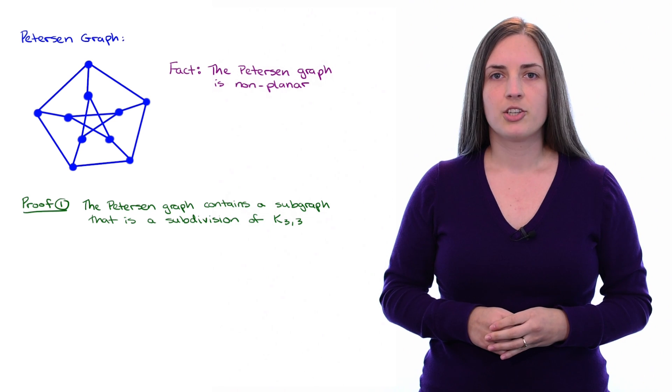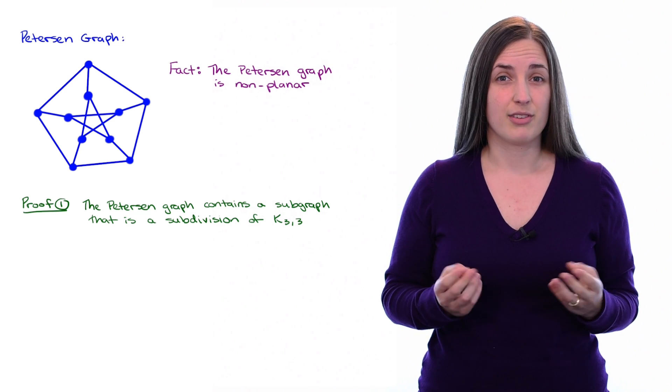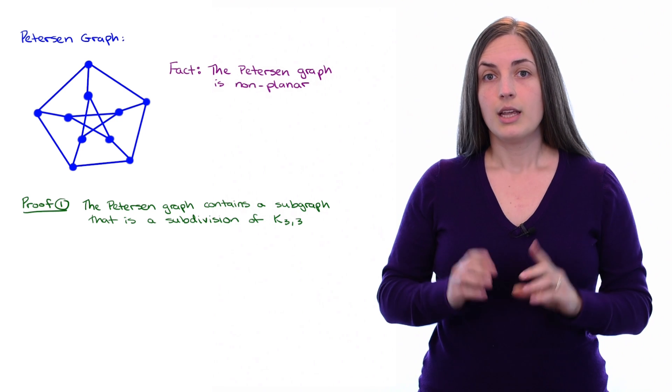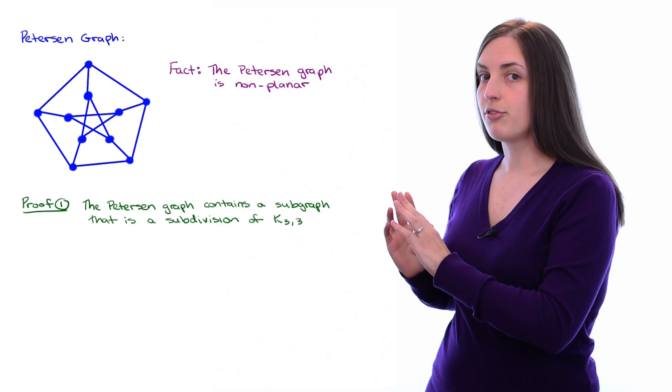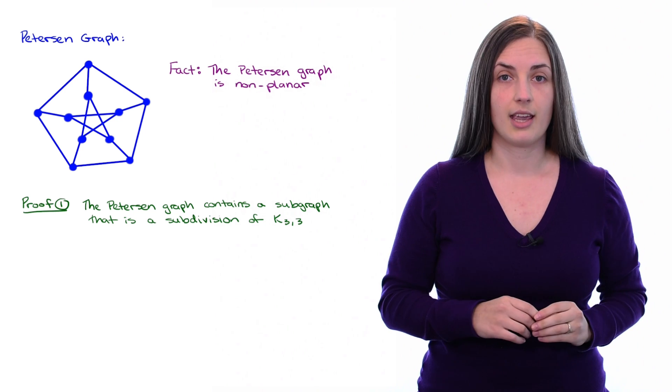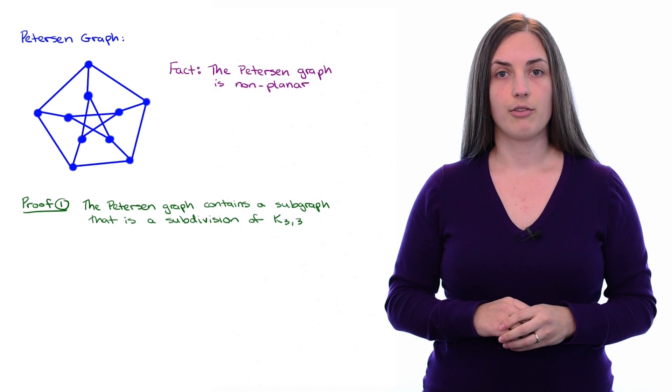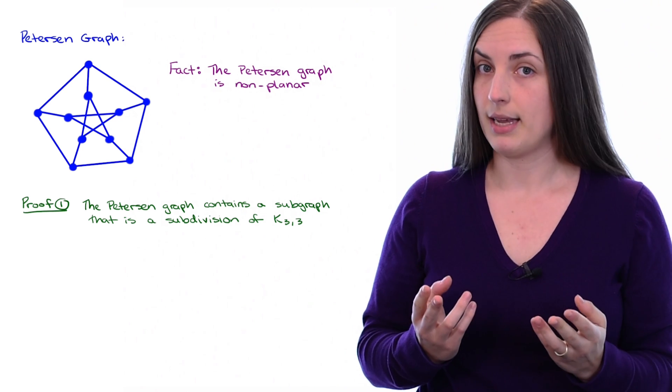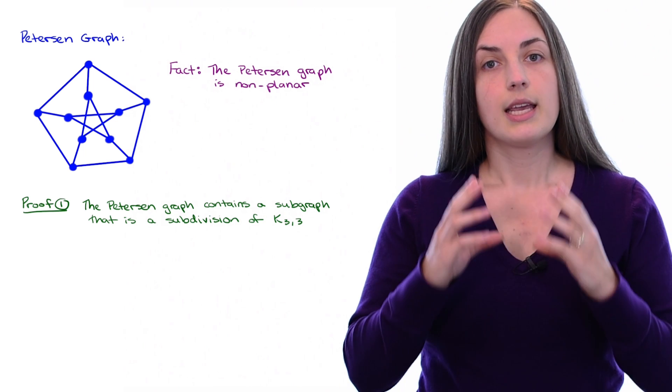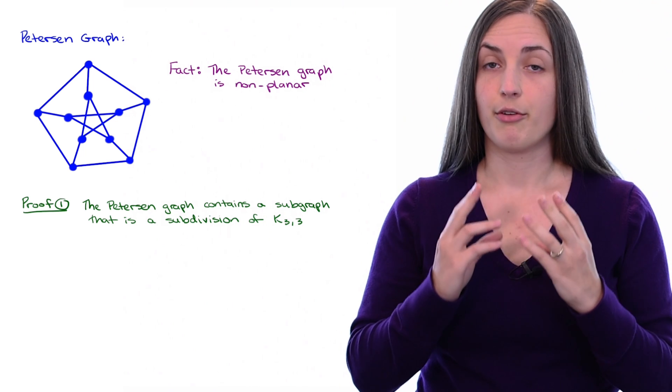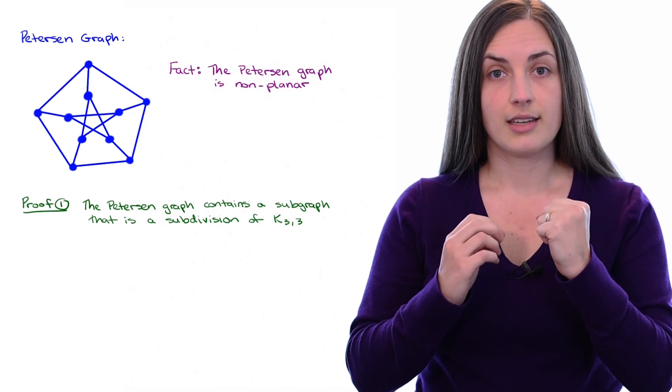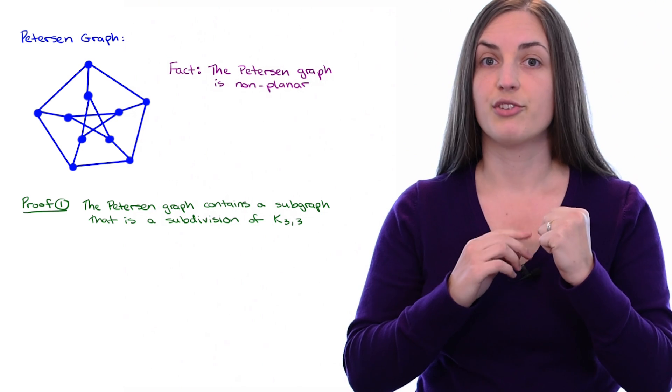But you may wonder why am I choosing K₃,₃. Doesn't it have a subdivision of K₅? Even though the Peterson graph looks remarkably similar to K₅, it does not contain a subdivision of K₅. If you think about it, it actually makes sense. Because K₅, the complete graph on five vertices, necessarily has every vertex of degree four.